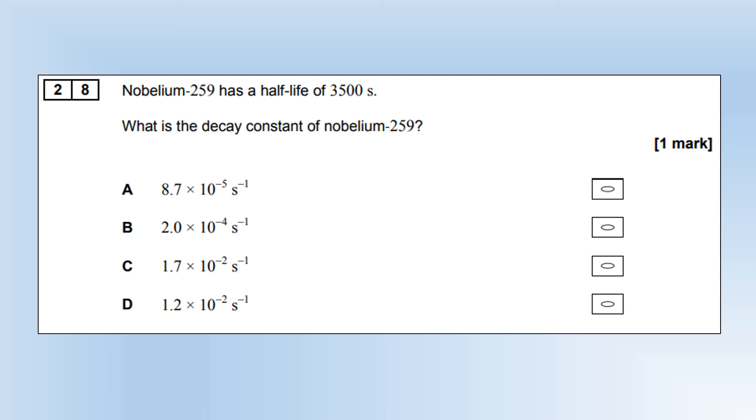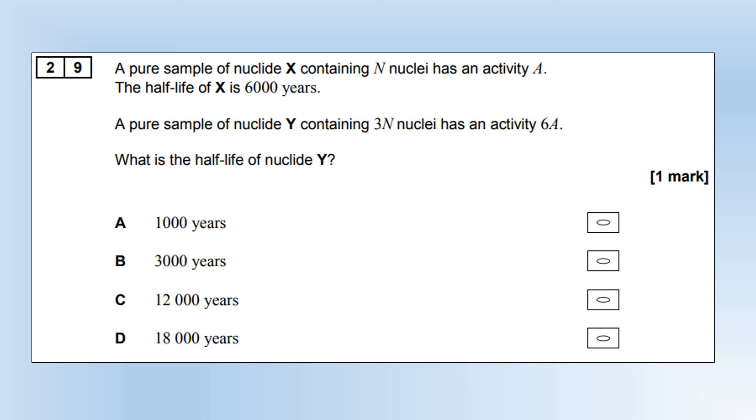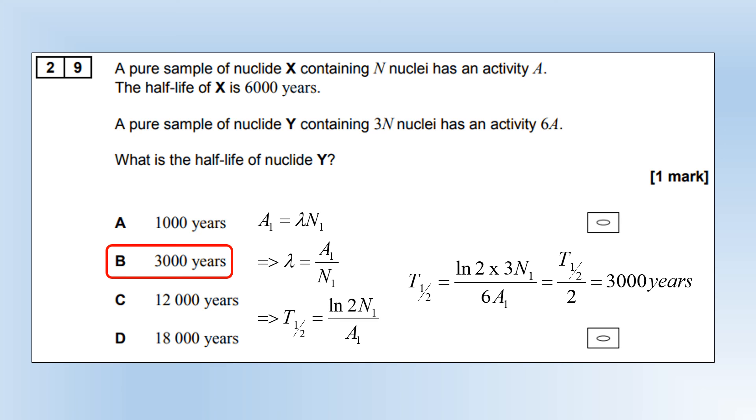Nobelium-259 has a half-life of 3,500 seconds. What is the decay constant of nobelium-259? We're just going to use natural log of 2 divided by half-life gives us the decay constant option B. A pure sample of nuclide X containing N nuclides has activity A. The half-life of X is 6,000. A pure sample of nuclide Y containing 3N nuclides has an activity of 6A. What is the half-life of nuclide Y? The decay constant of X is just going to be A over N, which means its half-life is going to be LN2 N over A. If we multiply the number of nuclides by 3 and multiply the activity by 6, that's going to make the overall equation divided by 2, which means we have a half-life of 3,000 years.